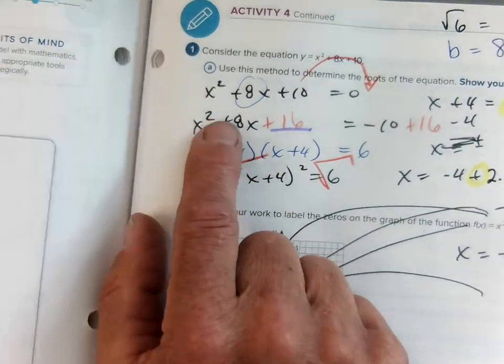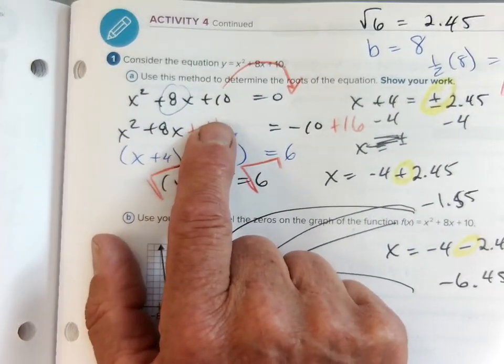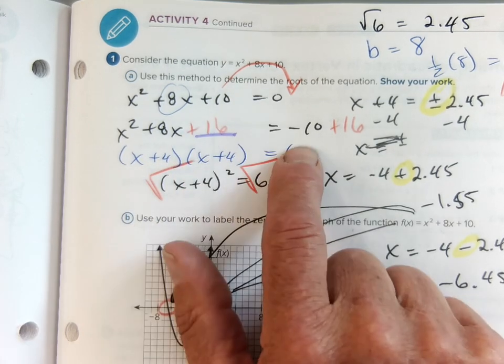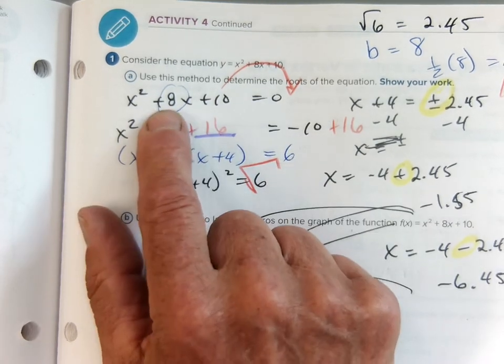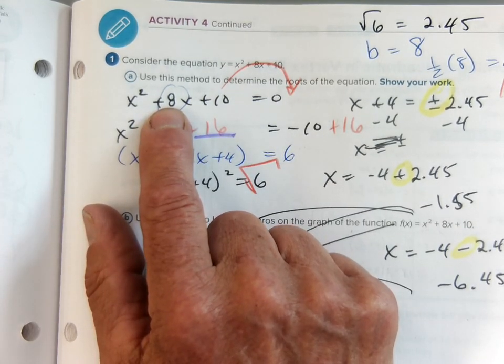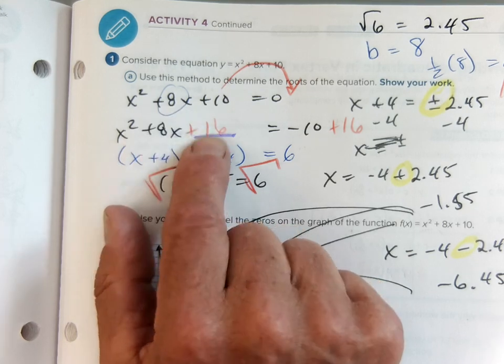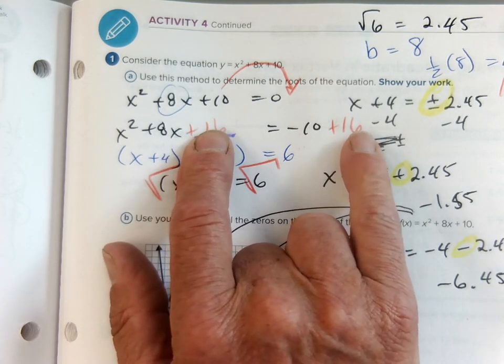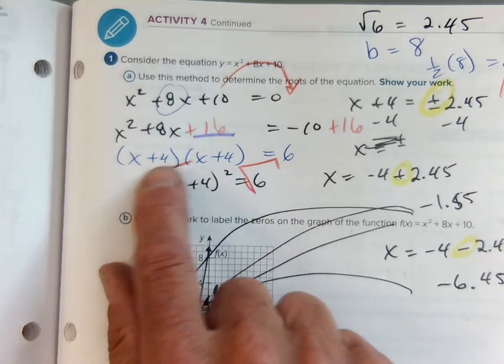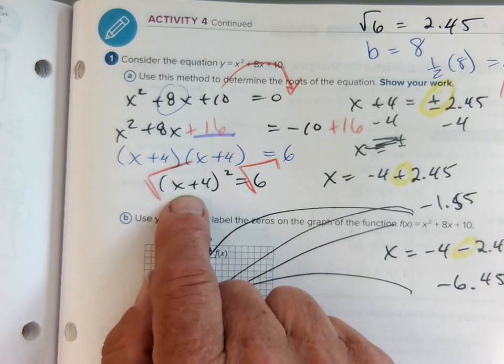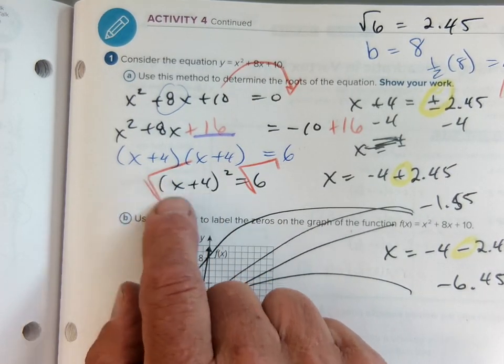So then question number, this one on the next page is the same thing. Move the 10 over to the other side. Half of 8 is 4. 4 squared is 16. So I added 16 to both sides. I factored it: x plus 4, x plus 4, x plus 4 quantity squared.